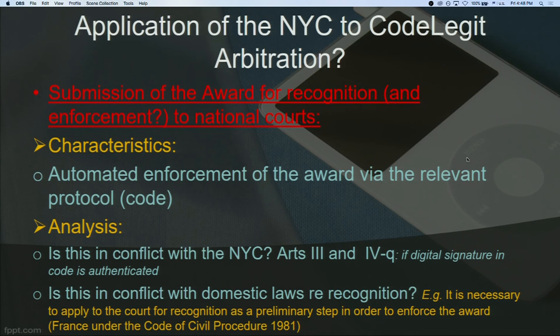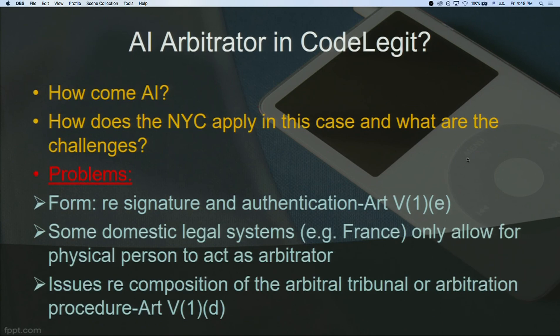Is automated enforcement of the award in conflict with domestic laws regarding recognition and enforcement? Some countries, like France, don't allow it. Also, what if the arbitrator is not a person but an AI? Does the New York Convention apply? Issues arise regarding signature, authentication, and composition of the arbitral tribunal. Some domestic legal systems, like France, only allow physical persons to act as arbitrators. There's also the issue of transparency — how the AI reached its decision — to avoid bias.